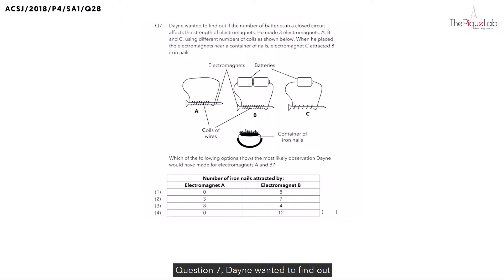Question 7. Dane wanted to find out if the number of batteries in a closed circuit would affect the strength of electromagnets. He then made three electromagnets, A, B and C, using different numbers of coils as shown below.